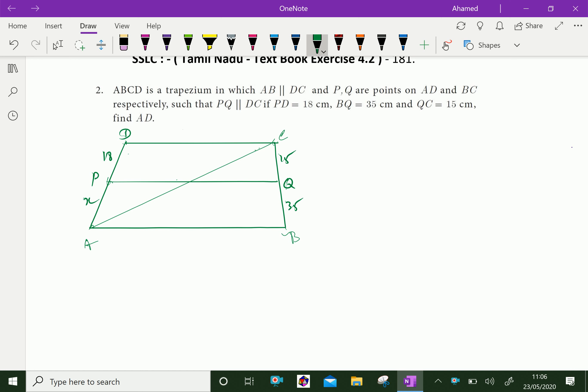Here, first of all, AB parallel to CD. Now, in triangle, by Thales theorem, in triangle ACD, this triangle, we have the proportions.